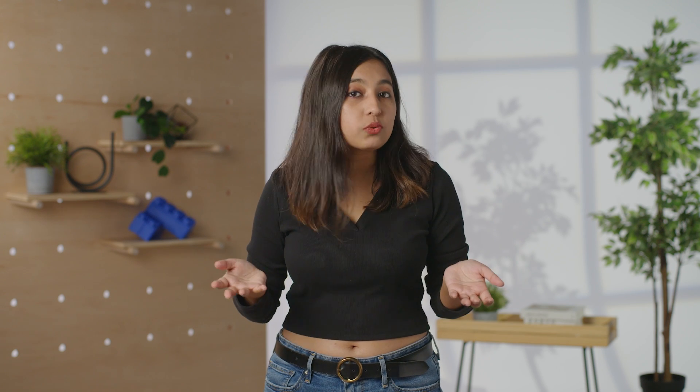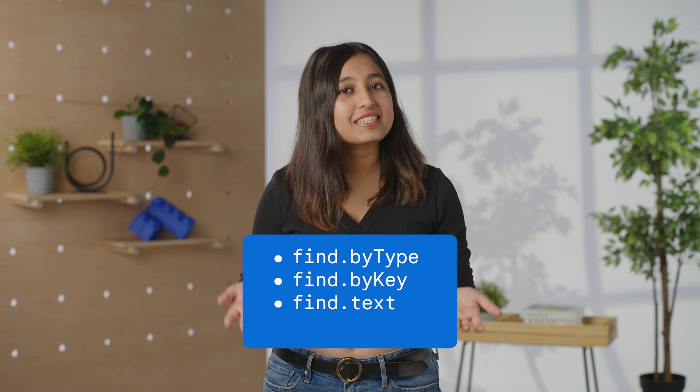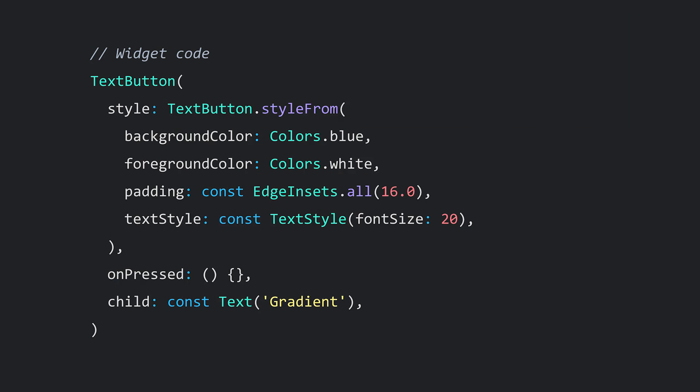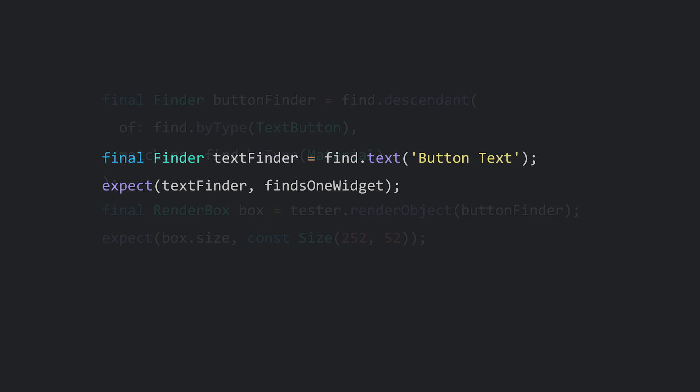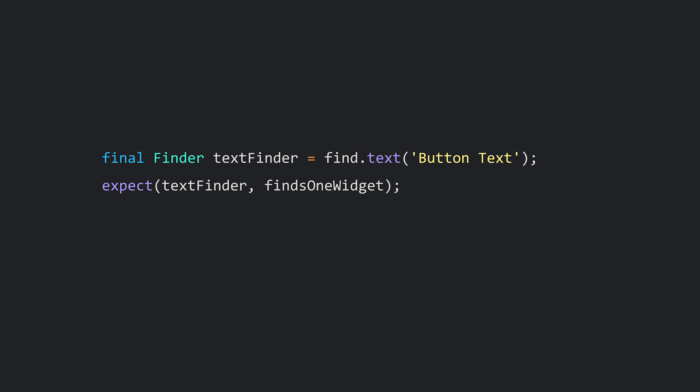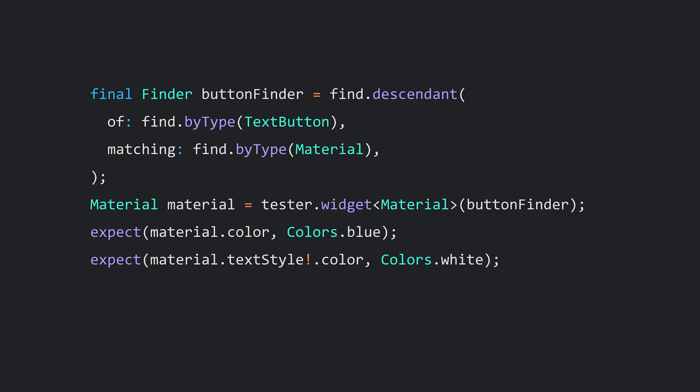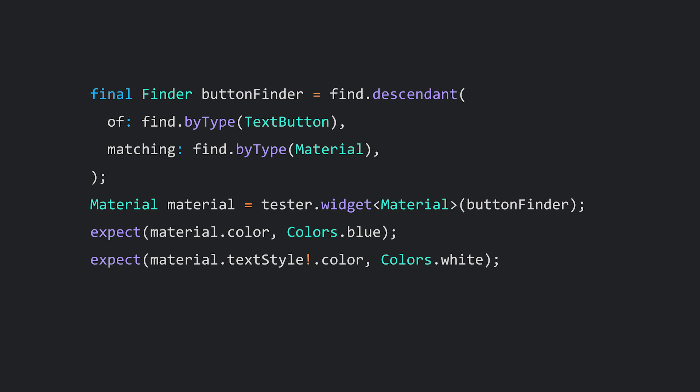Flutter's Finder API is the most direct way to verify correctness in most situations. Available methods can handle most cases, including findByType, findByKey, findText, and more. Let's consider this same button. Here's a Flutter widget test that builds this button and verifies its size, text, padding, and background color. Sounds like that button is pretty well tested to me — all without adding a golden file test to our codebase.